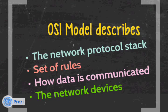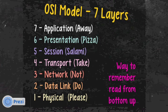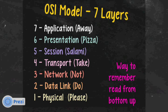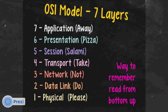We always present it with layer seven at the top and layer one at the bottom. Layer seven is the application layer, layer six is presentation, layer five is session, layer four is transport, layer three is network, layer two is data link, and layer one is physical. A good way to remember this is the phrase: 'Please Do Not Take Salami Pizza Away' — starting from the bottom: Physical, Data Link, Network, Transport, Session, Presentation, Application.